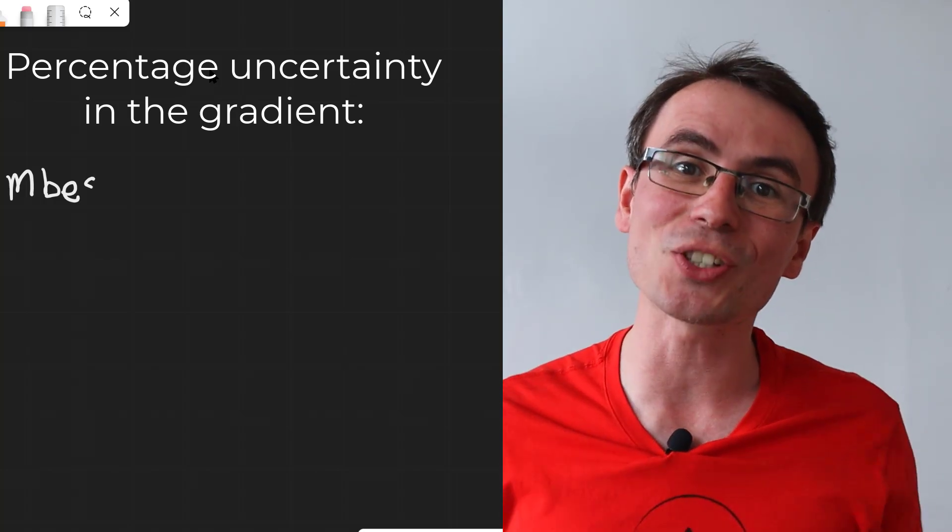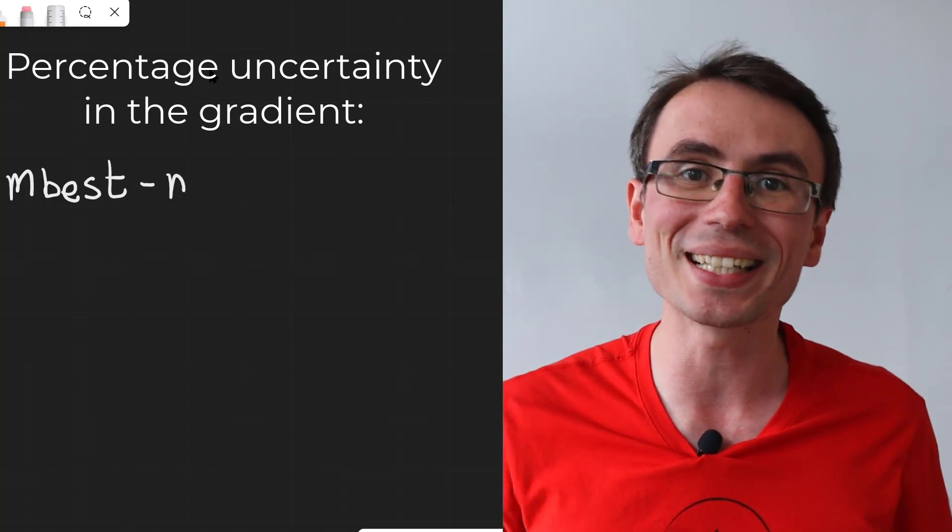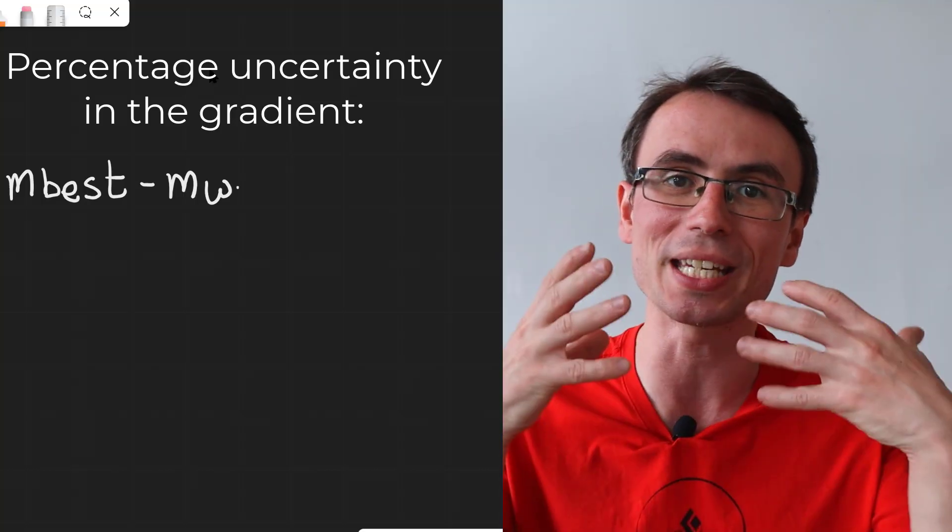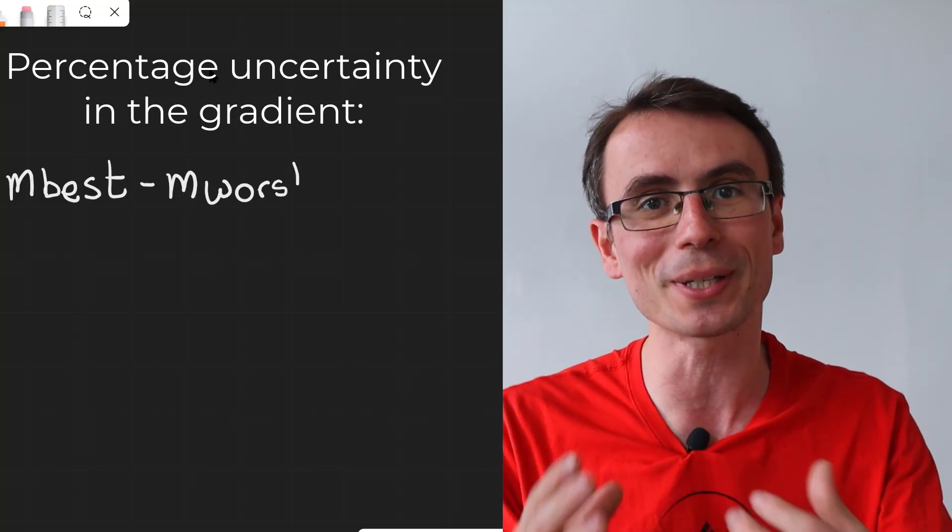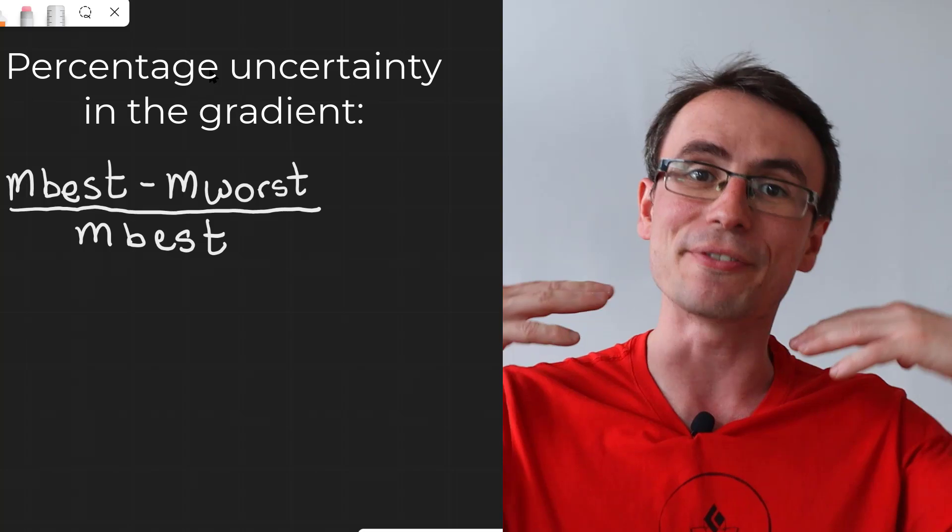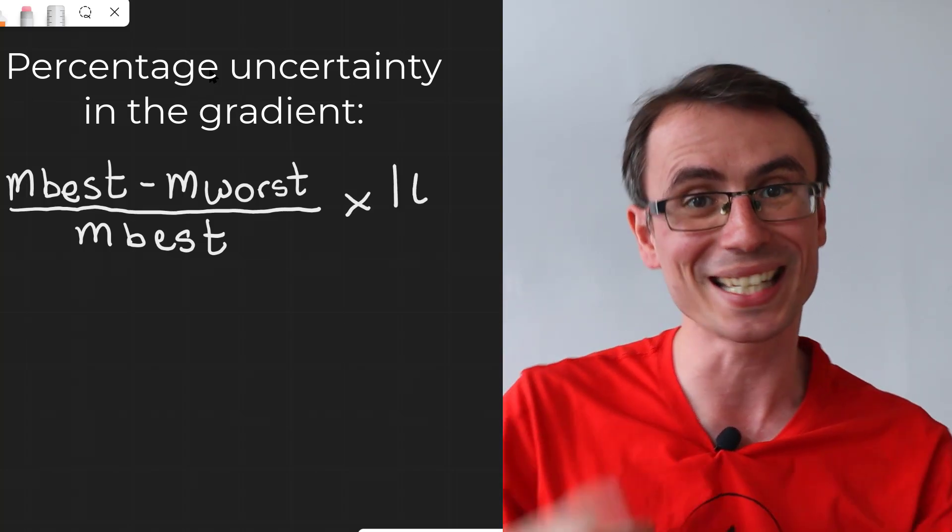We can calculate the percentage uncertainty in our gradient using our formula that it is equal to the gradient of the line of best fit, take away the gradient of the line of worst fit, divided by the gradient of the line of best fit times 100.